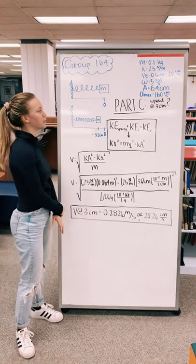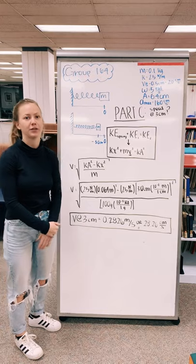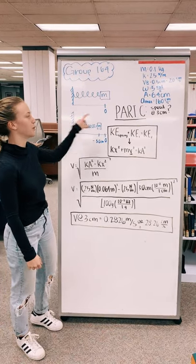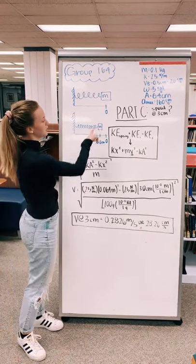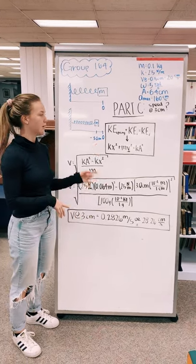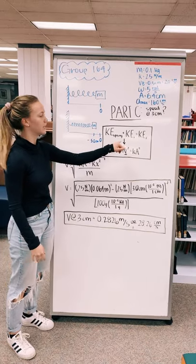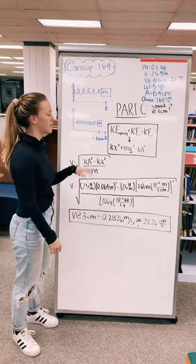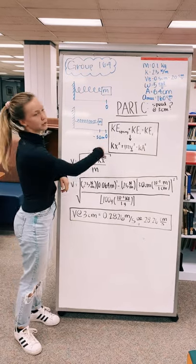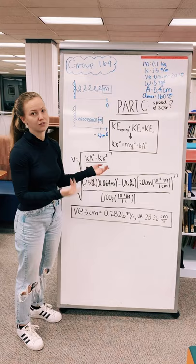For the third question, part C, we had to figure out what the speed was when the spring was pulled or pushed three centimeters from the equilibrium point. For this we use the exact same equation that we used for part A—the kinetic energy of the spring plus the initial kinetic energy equals the final kinetic energy. Again, we cancel out like terms, and instead of solving for amplitude we're going to solve for velocity.